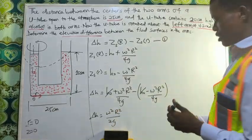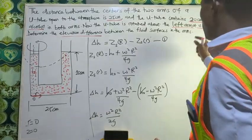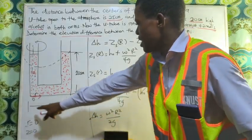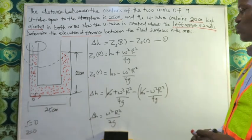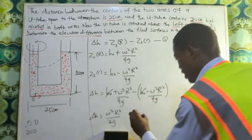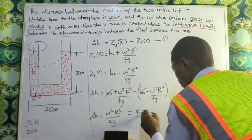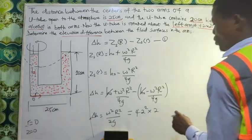This is what we're going to get. Now we have every information: we have our ω which is 4.2, we have our R which is 25 centimeters, and we have our g which is the acceleration due to gravity, 9.81.